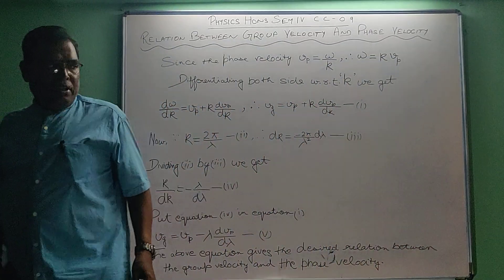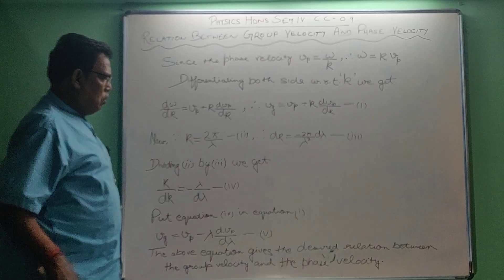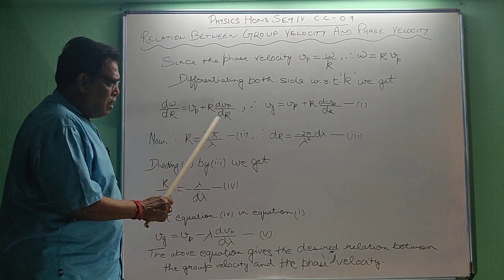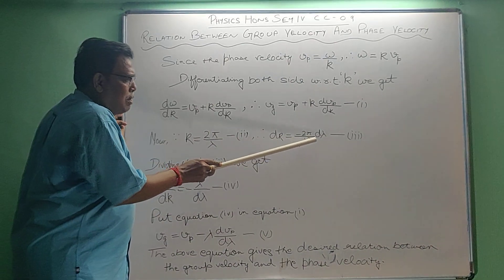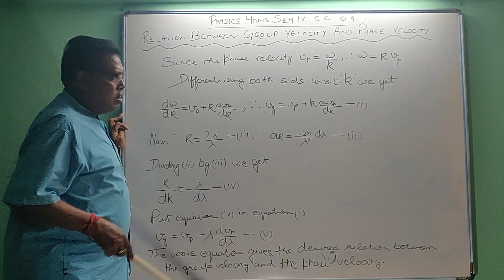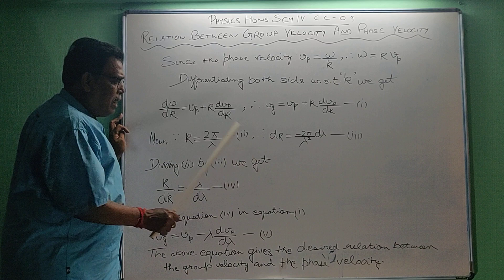Now we know that k equal to 2 pi by lambda, equation 2. So differentiating both sides, dk becomes minus 2 pi by lambda squared d lambda. It is equation 3.